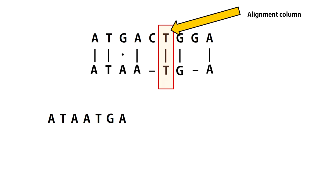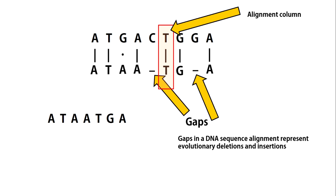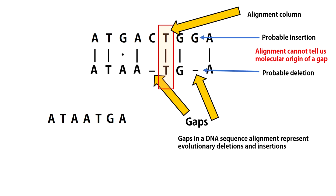The first thing you need to understand is an alignment column. An alignment column basically represents a match between two sequences of interest. A gap is an arbitrary null character represented by a dash. During an alignment, a gap may be placed into either of the sequences — it represents one or more amino acid or nucleotide residues present in only one of the two sequences. This can happen due to evolutionary insertions and deletions. In other words, an alignment allows us to infer an evolutionary insertion or deletion in the form of a gap, but it cannot tell us the exact molecular basis.